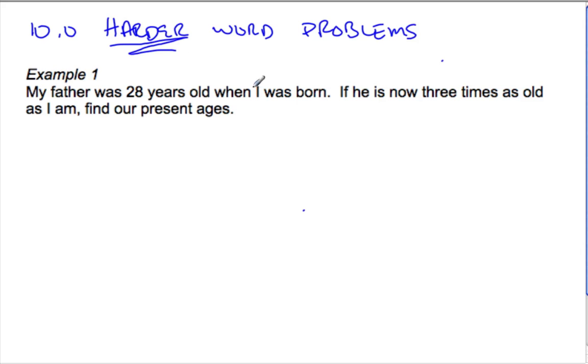So it's a good idea to just pause your screen, see if you can do them, see if you can start it off, and then we'll give you a few hints. Okay, so the first one says, my father was 28 years old when I was born. If he is now three times as old as I am, find our present ages.